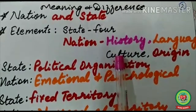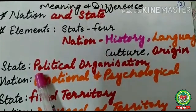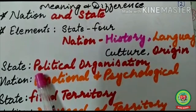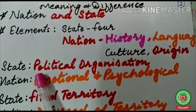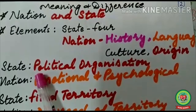The second difference is about political organization. The state works for the security and welfare needs of the people. For example, India is a state and we are all its citizens. Being its citizens, we are provided all government and political security.